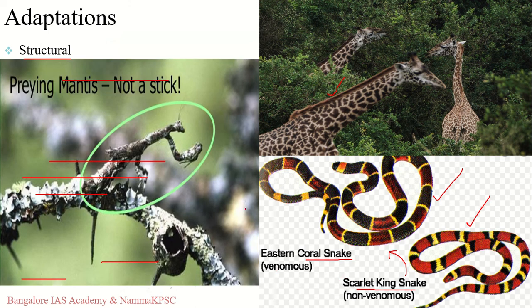Another good example is the praying mantis, which in this image is mimicking its surrounding environment. This is slightly different from camouflage — it is not just trying to hide, it is also mimicking its surroundings, making it difficult for other organisms to detect it, helping it survive and escape from predators. These are all examples of structural or morphological adaptations.